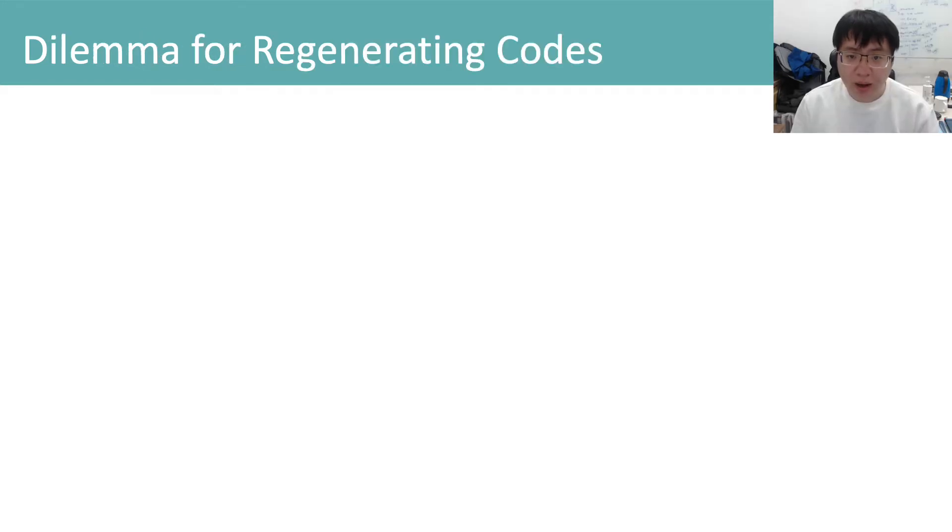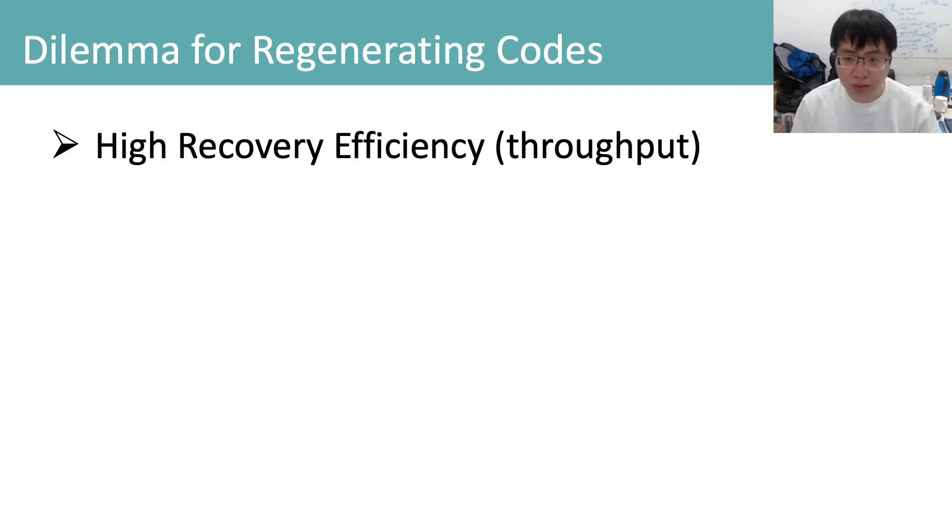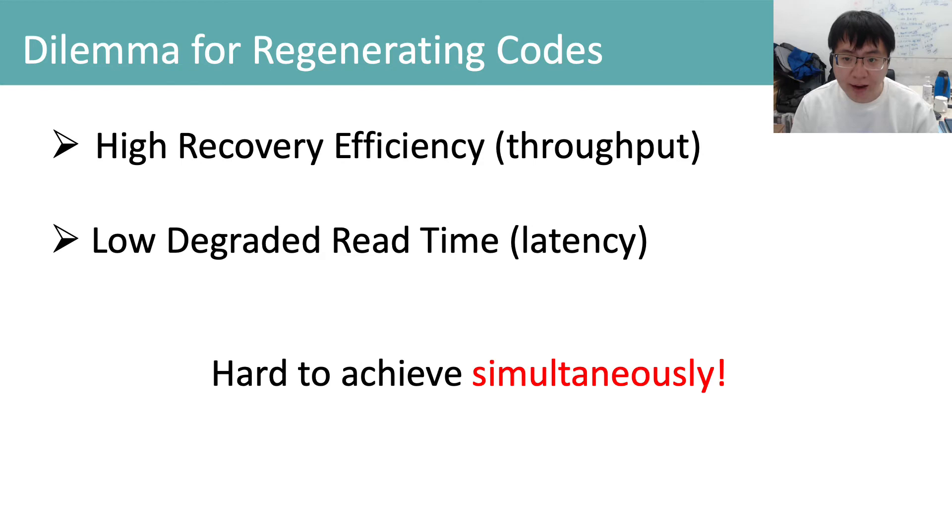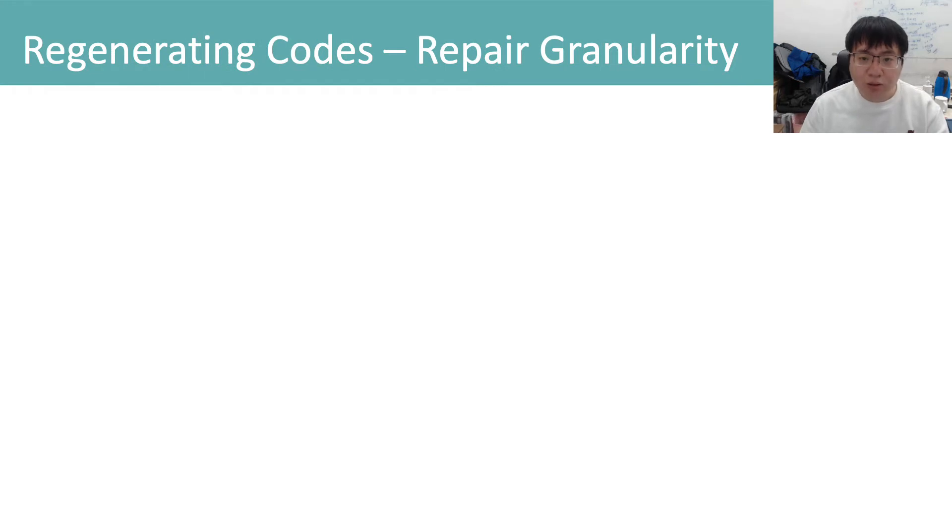Optimality in repair cost, however, does not necessarily improve recovery efficiency or reduce degraded read time in a practical object storage system. Actually, high recovery efficiency and low degraded read time are hard to achieve simultaneously. This is mainly due to the different granularity of repair between regenerating codes and RS codes.